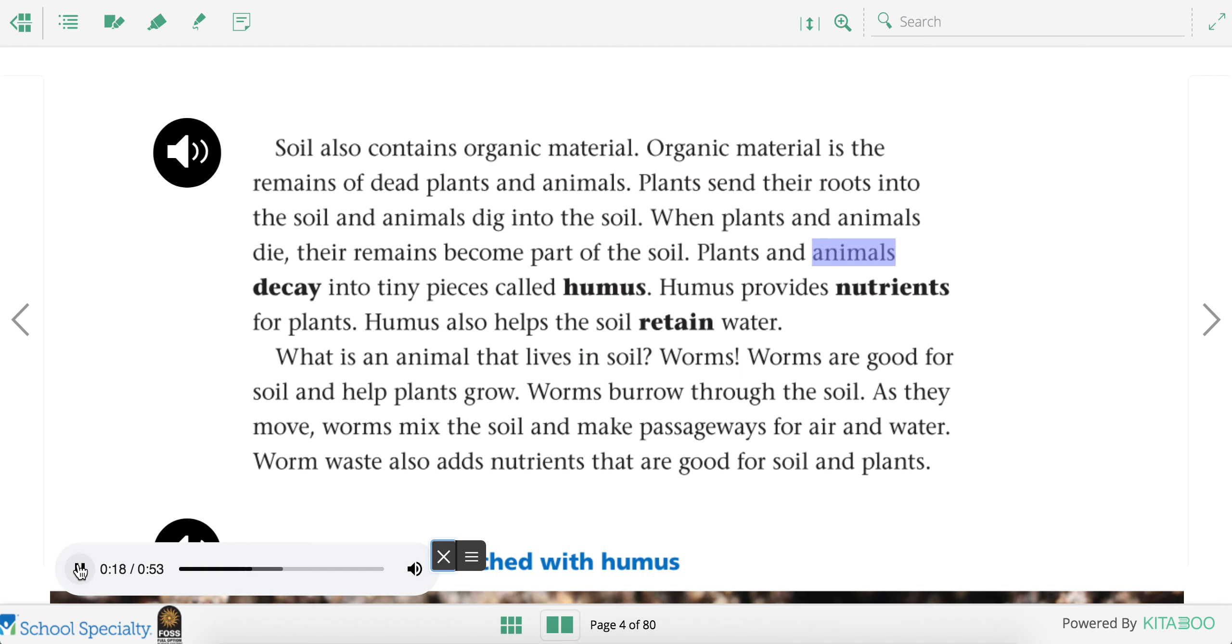Plants and animals decay into tiny pieces called humus. Humus provides nutrients for plants. Humus also helps the soil retain water. What is an animal that lives in soil? Worms. Worms are good for soil and help plants grow. Worms burrow through the soil.